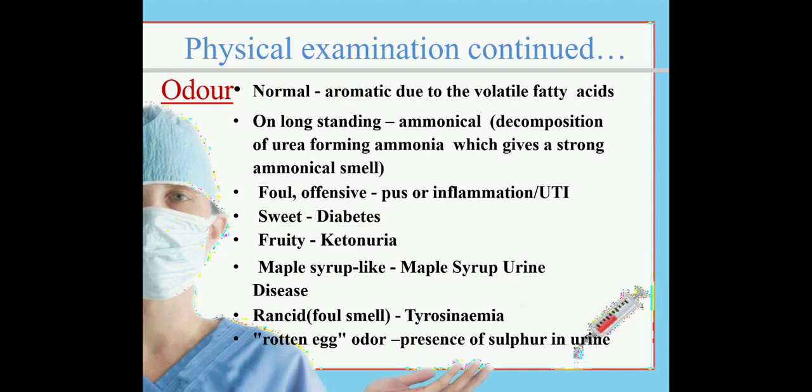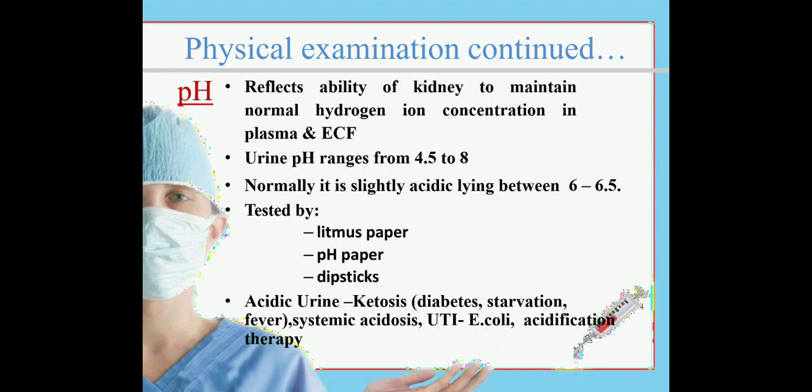The pH of urine ranges from 4.5 to 8. The pH value reflects the ability of the kidney to maintain normal hydrogen ion concentration in plasma and extracellular fluid. Normally it is slightly acidic, lying between 6 to 6.5, and can be tested by litmus paper, pH paper, or dipsticks. Acidic urine can be seen in cases of ketosis, diabetes, starvation, and fever.